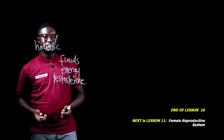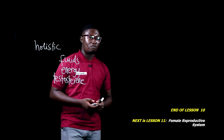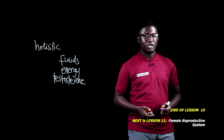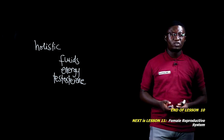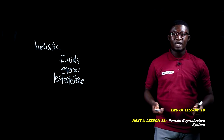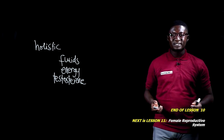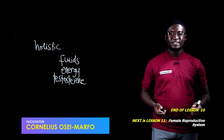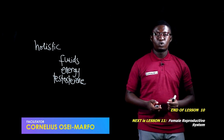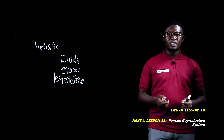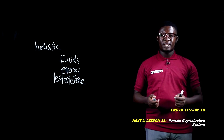This brings us to the end of this lesson. In this lesson, we have defined reproductive health, and then we have looked at the male reproductive system — the parts and the functions of each one of the parts. In our next lesson, we'll look at the female reproductive system. See you in the next lesson.